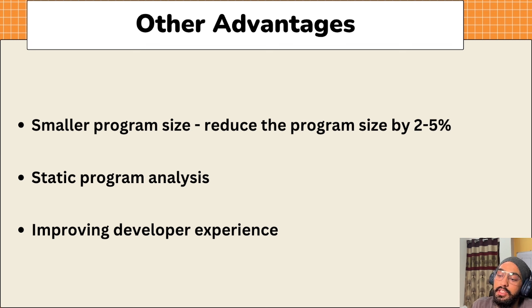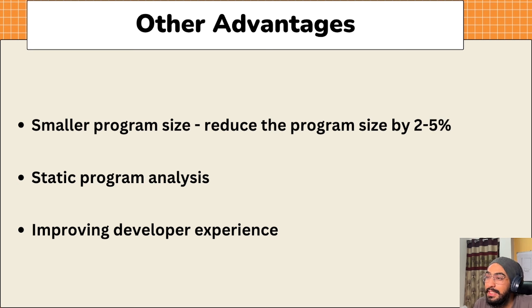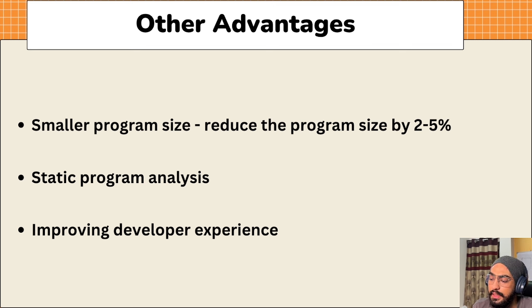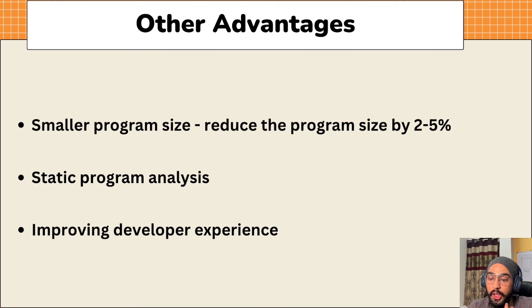Some other advantages: one advantage of EOF is smaller program size. The added structure of EOF allows compilers to optimize how they structure the code, which might reduce program size by two to five percent. EOF also removes dynamic jumps, reducing analysis complexity to O(n) in the worst case. EOF separates EVM bytecode from data, making it easier for static analysis tools, formal verification, and L2s to process executable code. Overall this improves the developer experience significantly.